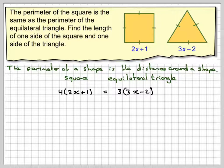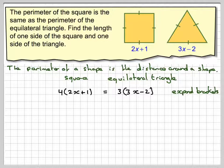So we'll put them equal, and then we'll solve the equation. The first thing to do is to expand the brackets. So 4 times 2x gives me 8x, and 4 times 1 gives me 4.